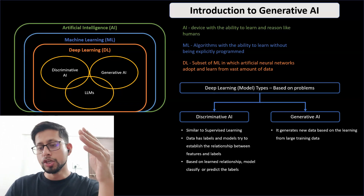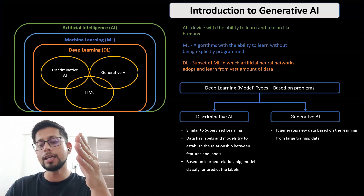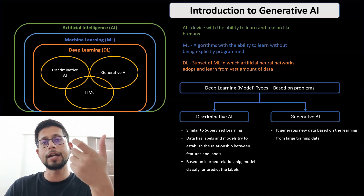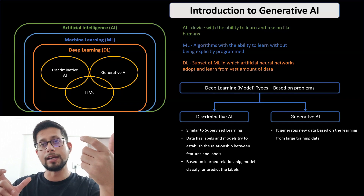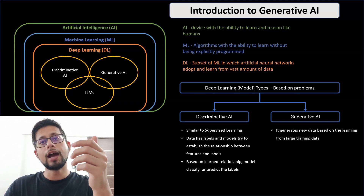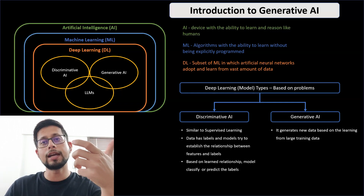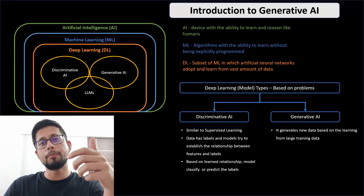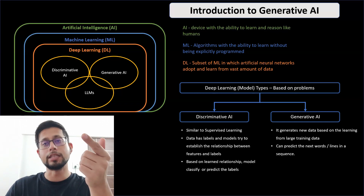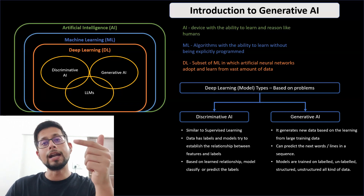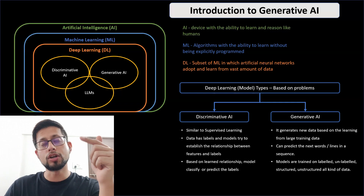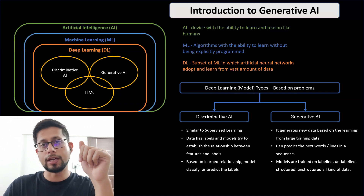The new thing is generative AI and how it differs. Generative AI generates new data based on learning from large training data — this is very important. For example, if you're writing a sentence and want to predict the next word, the model must be trained on a huge amount of data to have the capability to generate that next word. Generative AI models are trained on labeled, unlabeled, structured, and unstructured data — all kinds of data.